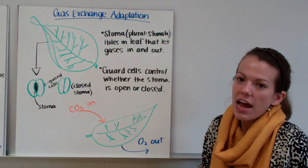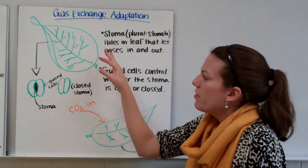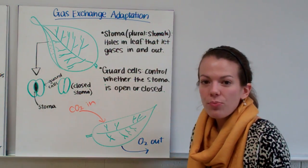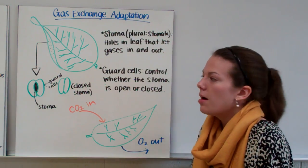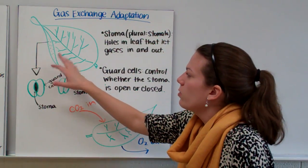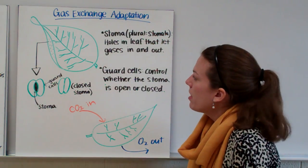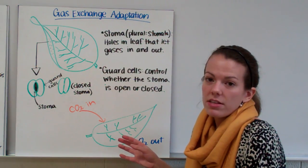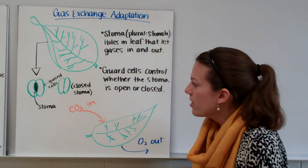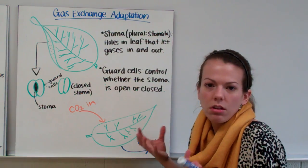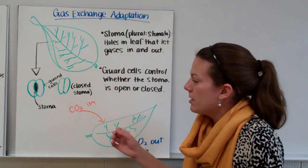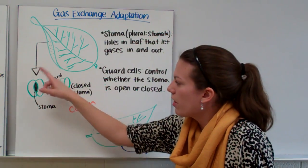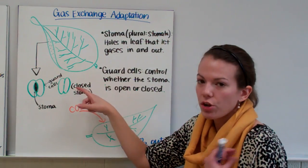Now for gas exchange adaptations. Here's a leaf, and if you've ever looked at a leaf under a microscope or looked at it very carefully, you'll notice that a leaf has a lot of holes on its surface. So there's our holes. They can be on the top or the bottom of the leaf. Now if you zoom in on these holes using a microscope or a magnifying glass, you can see that the holes don't just look like a hole. They're made up of more than just an empty space.